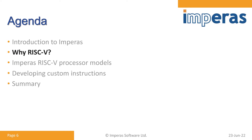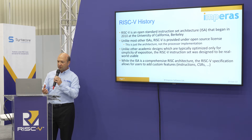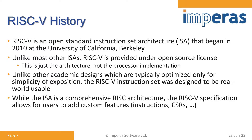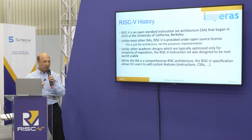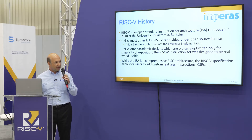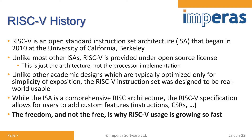Why are people using RISC-V? RISC-V was started at the University of California, Berkeley in 2010. Unlike most other instruction set architectures, RISC-V is provided under an open source license — this is just the architecture, not the implementation. Unlike other academic designs typically optimized only for simplicity of exposition, RISC-V was developed and intended to be real-world usable. While the ISA is a comprehensive RISC architecture, the RISC-V specification allows users to add custom features. It's that freedom — not just the free part of open source — which is why RISC-V usage is growing so fast.